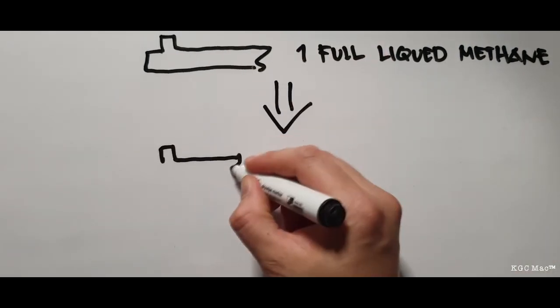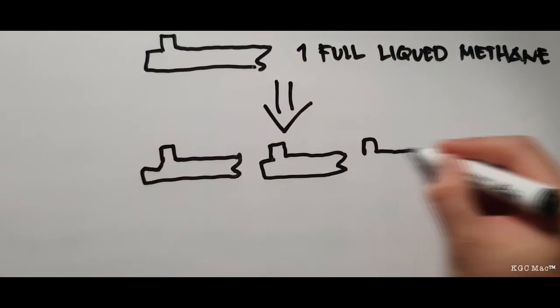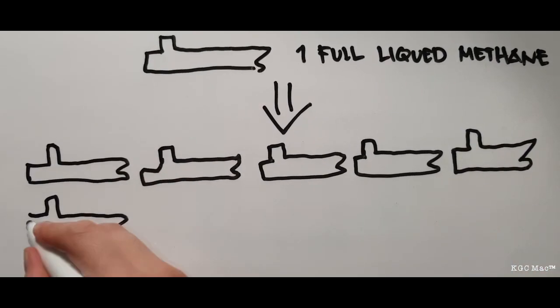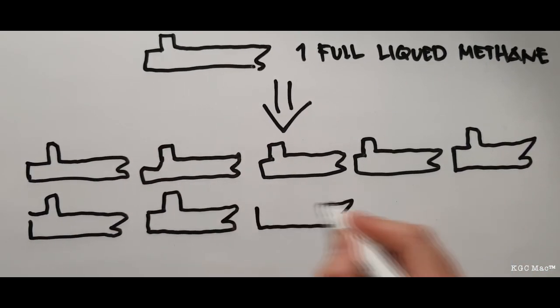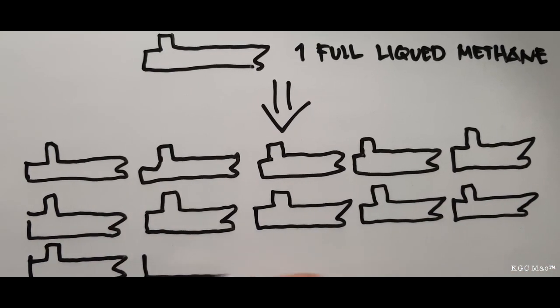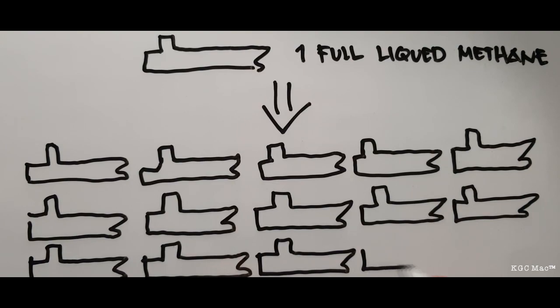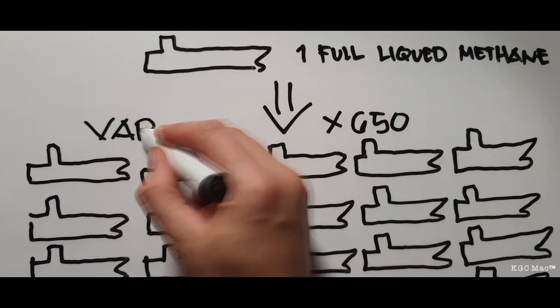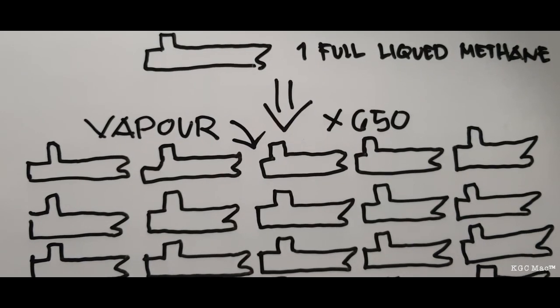If you convert that liquid natural gas into its gas state or vapor state, it will expand to approximately 650 times. Which means we need 650 vessels to transport an equal amount of LNG in its liquefied form.